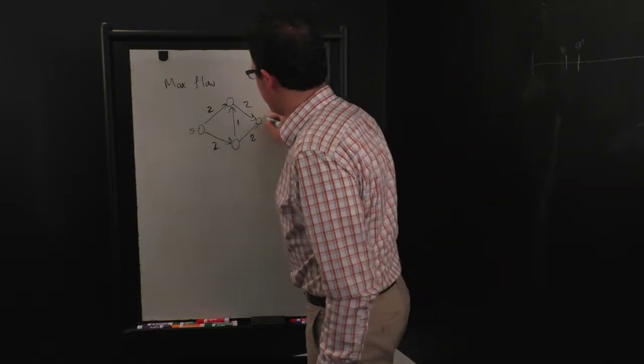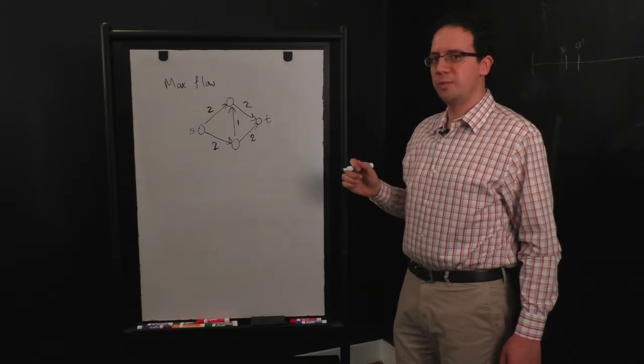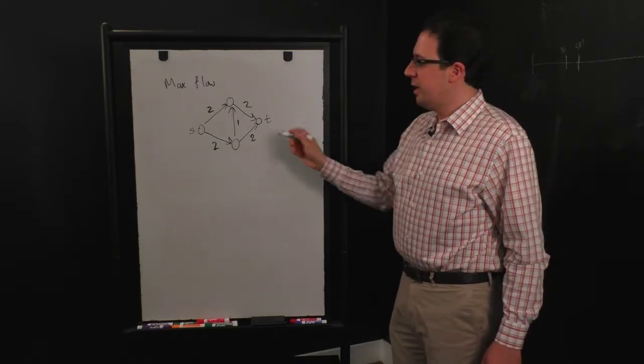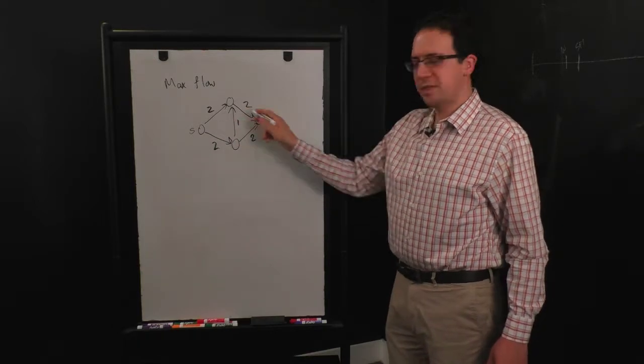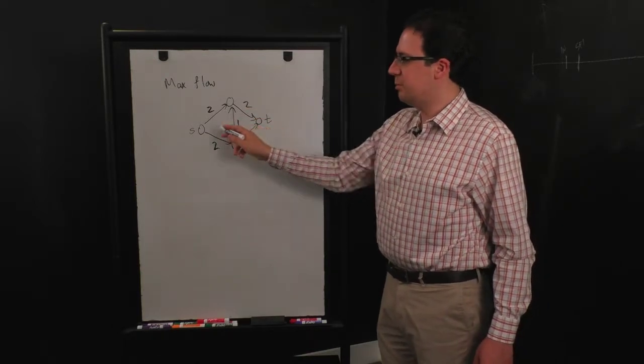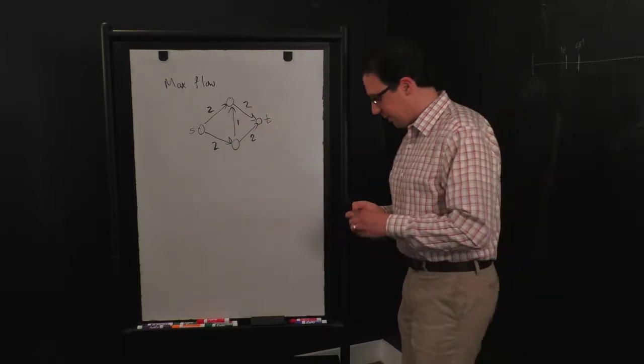And we'll also have a source vertex and a target vertex. So this is what an input to this problem might look like. And the goal is to essentially push water through these pipes without exceeding their capacities, but in such a way that you maximize how much water is flowing from s to t.